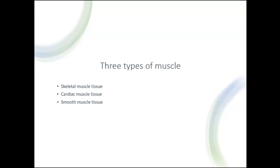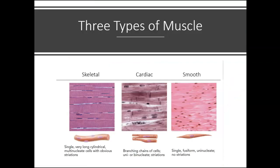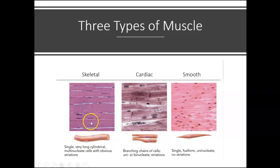Let's review the three types of muscles: skeletal muscle tissue, cardiac muscle tissue, and smooth muscle tissue. First, let's take a look at skeletal muscles. This is the main type of muscle we're going to focus on in this video. Skeletal muscles are going to be long, and we call each of these a skeletal muscle fiber, which is the same thing as a skeletal muscle cell. Because this cell is so long, we use the term fiber sometimes.